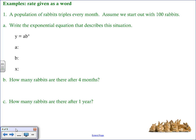We start with the same exact equation y equals a b to the x. In this case a is going to represent 100 because we started out with 100 rabbits. B is going to be 3 because we saw that word triples. In fact maybe we should highlight that for you.